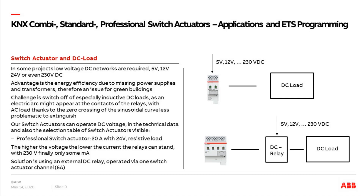I have three more small topics for the end of this online learning session, having to do with switching of different kinds of loads. Starting with switch actuator and DC load — direct current. This is not very often required, but comes more and more. Typically we have alternating current AC loads, which is standard. But in some projects, low voltage DC networks are coming or are required — whatever voltage from 5V up to 12, 24, or 48 volt. I have also heard of 230 volt DC networks. The advantage of low voltage networks is that you have more and more low voltage consumers in the building, saving energy because you don't need any transformer or power supplies — a topic for green buildings.